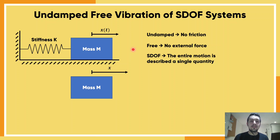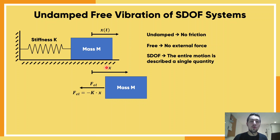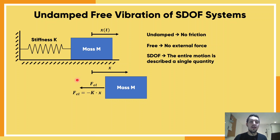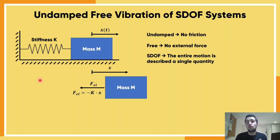Let's consider moving our mass a certain amount x to the right. When we do that, the spring stiffness will be activated because the spring will be under tension and will try to push the mass back to the left — this is what we call the elastic force. The elastic force is equal to the spring stiffness k times the elongation of the spring, which in this case is the same as the displacement of the mass. There is also a minus sign: if x is positive (to the right), the spring is under tension and causes a force to the left; if displacement is to the left, the spring is under compression and causes a force to the right. So the elastic force is always opposite to the displacement x.